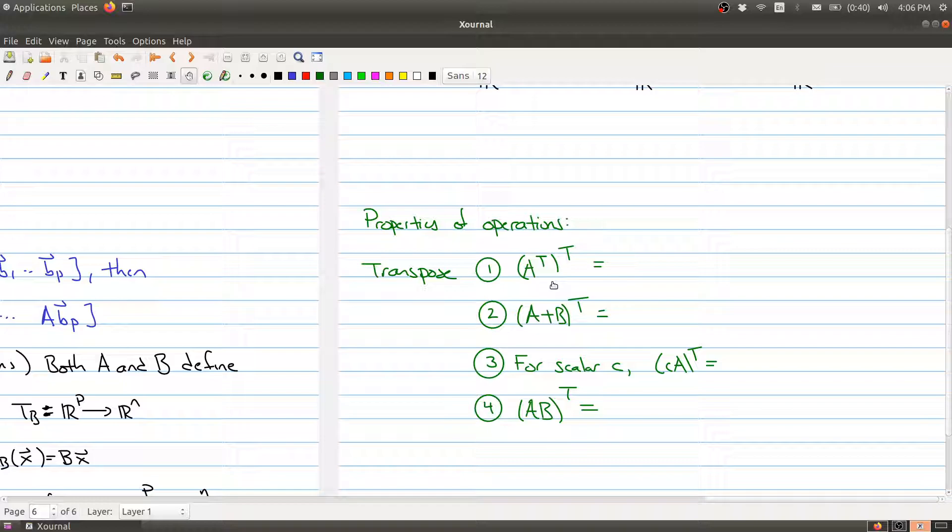So the first property of the transpose is that if you take the transpose of the matrix and then you take its transpose again, what is that going to be equal to? Well, it's just going to be equal to the matrix itself that you started with.